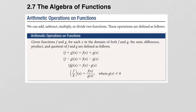In section 2.7, we look at the algebra of functions, and we begin with the arithmetic operations on functions. We're going to talk about how we can add, subtract, multiply, or divide two functions. So if we're given two functions f and g, for each x in the domain of both f and g, the sum, difference, product, and quotients of f and g are defined as follows.